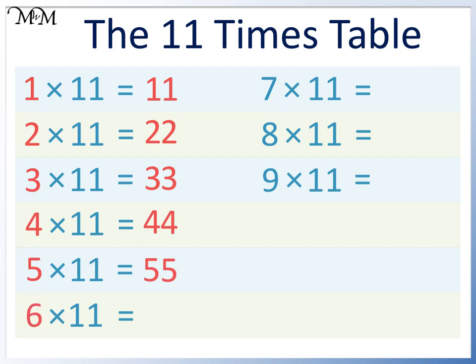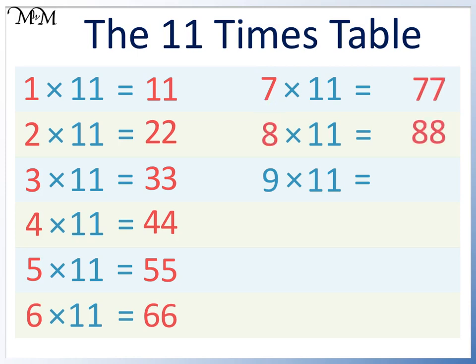6 times 11 equals 66. 7 times 11 equals 77. 8 times 11 equals 88. And 9 times 11 equals 99.